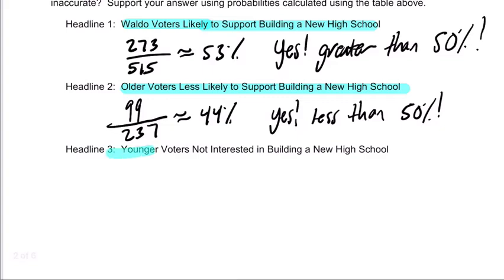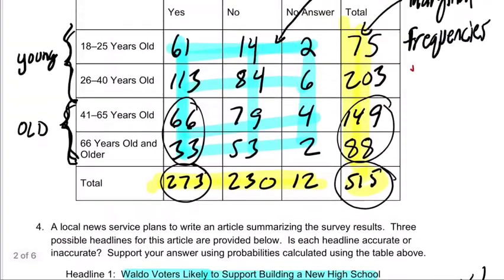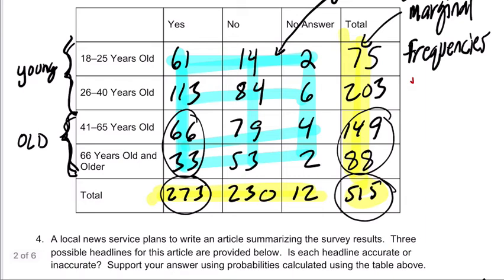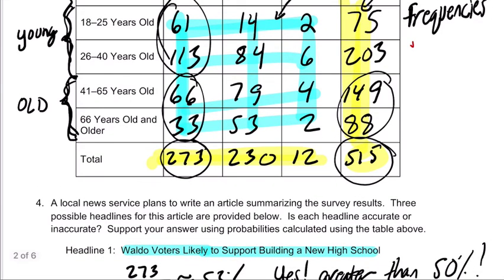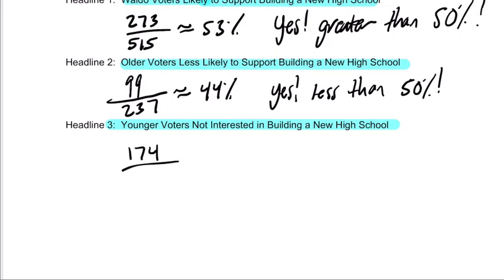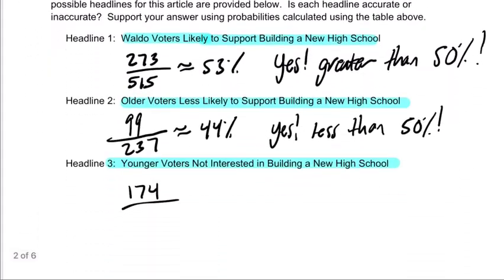Finally, we have younger voters not interested in building a new high school. Okay. Well, let's take a look at our younger ones here. This is the young group right here. And the young group that voted yes is 61 plus 113. So that's 174. So 174 younger voters out of 203 plus 75, which is 278.